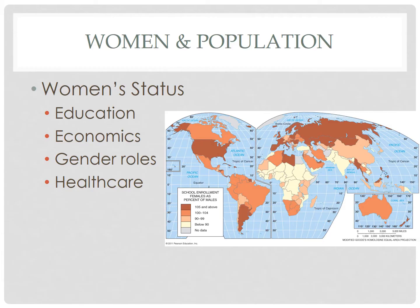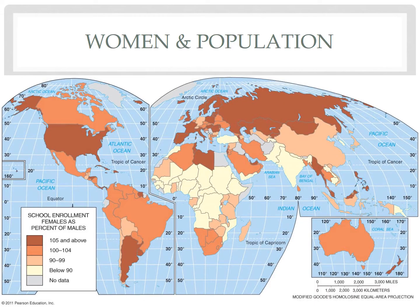As women gain greater access to land, money, education, and influence, there are a variety of demographic characteristics that change. Less than 40% of countries provide girls and boys with equal access to education. What type of map are we looking at here? What is our scale of analysis? And is school enrollment — looking at the percentage of girls to boys — a good indicator of development?